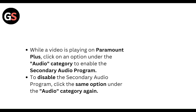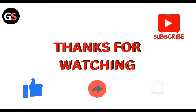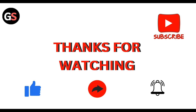While a video is playing on Paramount Plus, click on the option under the audio category to enable the secondary audio program. To disable the secondary audio program, click the same option under the audio category again. That's all — thanks, guys.